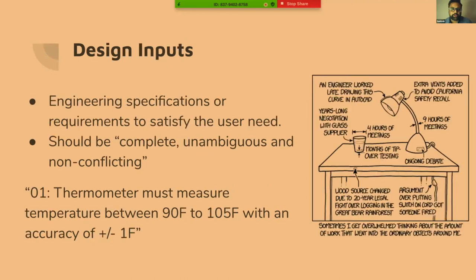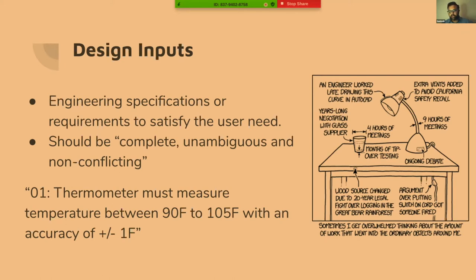The user needs and design inputs are not just about what the end user wants — risk also has to be taken into consideration, as required by the regulator. The risk of how it would be manufactured is a risk that needs to be considered. It could also be based on complaint data — for example, if we've had issues with doctors dropping the thermometer, we need to make it sturdy enough. That would translate to a design input: what is the loading on the thermometer when it falls, and how do we design for that?